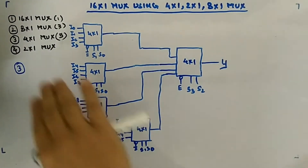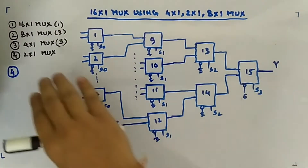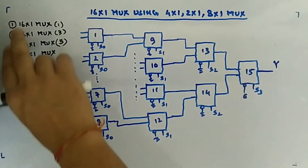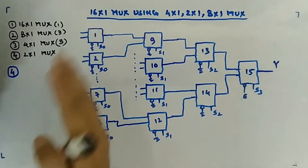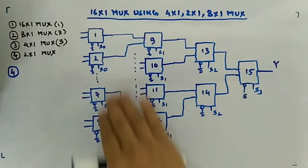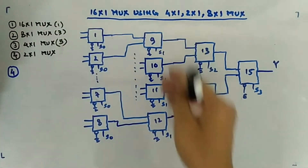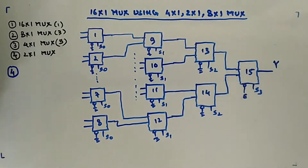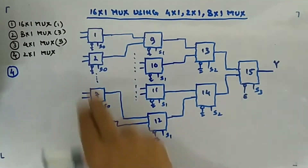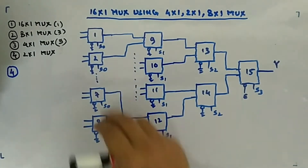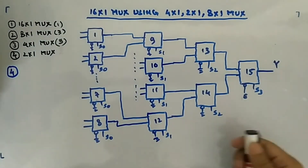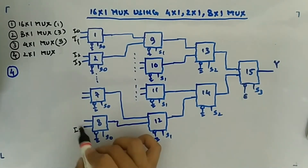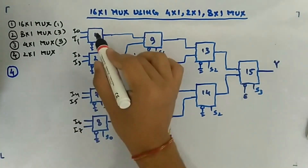The fourth and last case uses 2:1 MUXes to create a 16:1 MUX. We have 2:1, we want 16, so dividing gives 8 - meaning 8 two:1 MUXes in the first layer. The inputs are I0-I1 to the first, I2-I3 to the second, and so on up to I14-I15 to the eighth. This is a ladder-type structure.